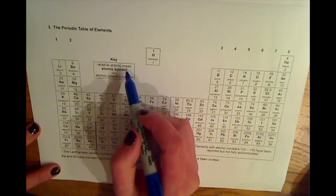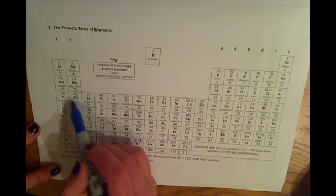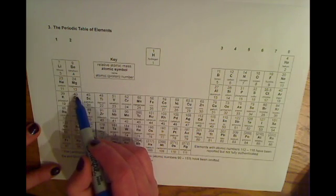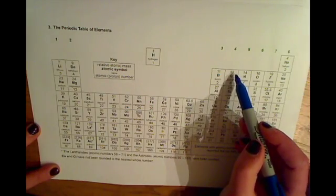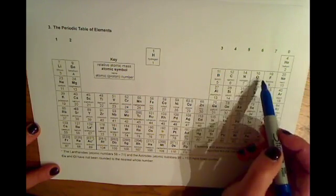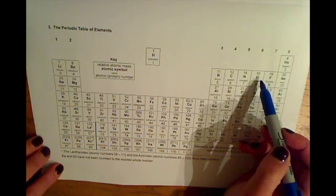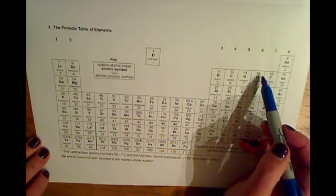So we need to find calcium, the relative atomic mass of calcium is 40. Carbon, the relative atomic mass of carbon is 12. And oxygen, the relative atomic mass of oxygen is 16.